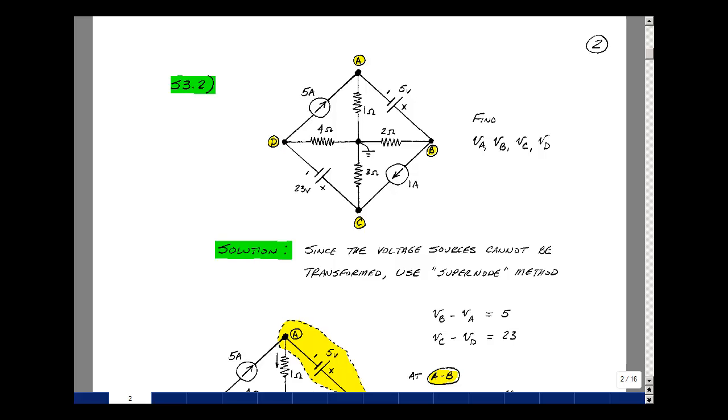Now we have an inspection algorithm for forming node equations to solve for node voltages, but what we have here are voltage sources with no series resistance, so we can't do a source transformation. We did have a technique to cover this, and it's called the supernode method. Let's apply it to this circuit.